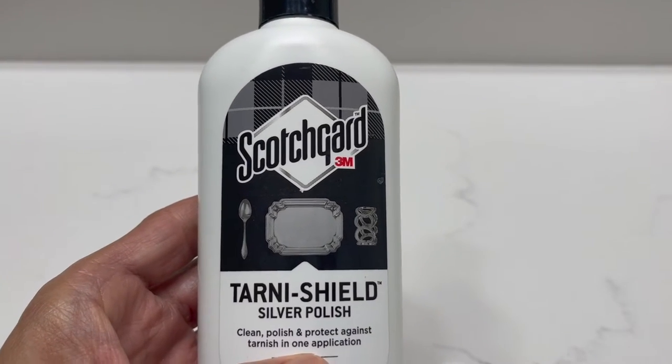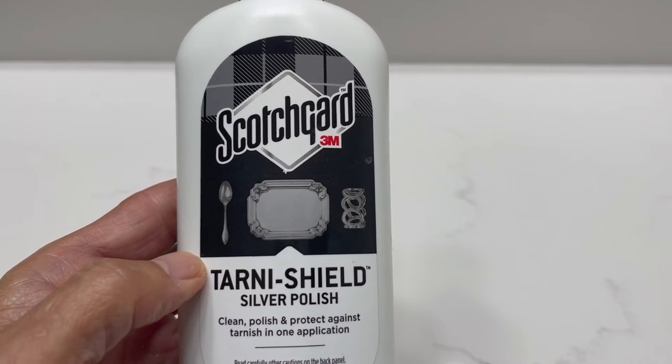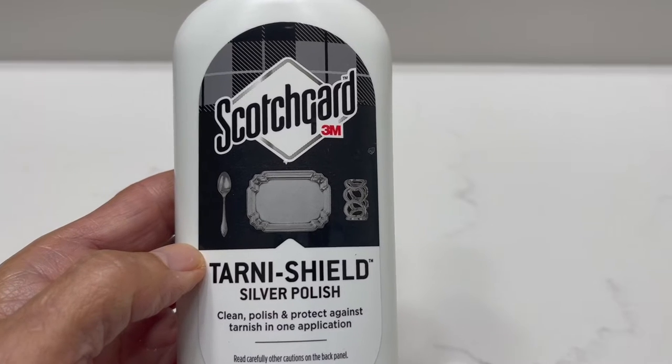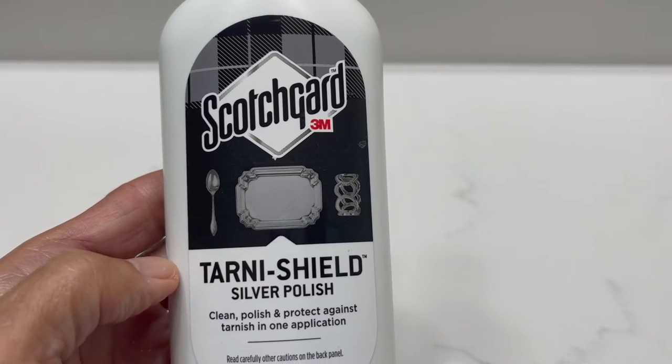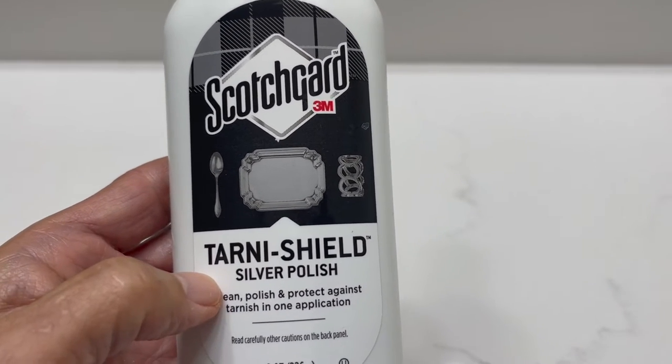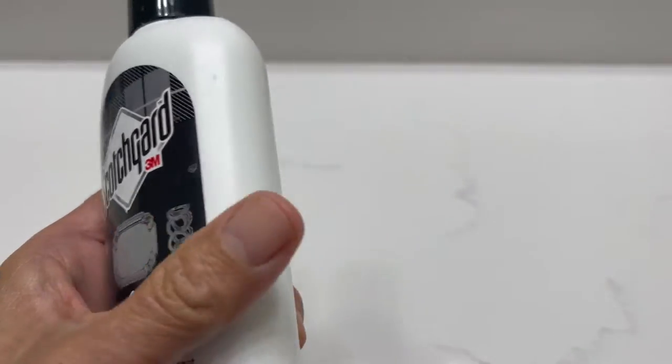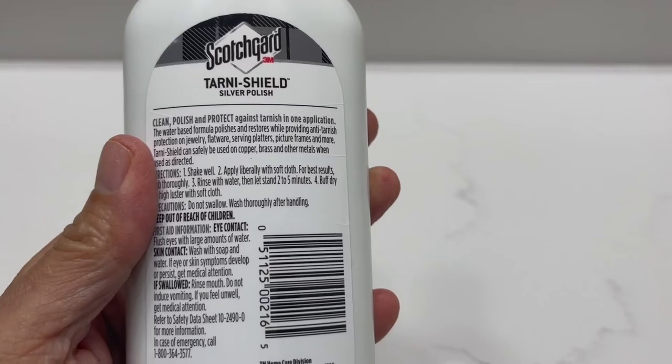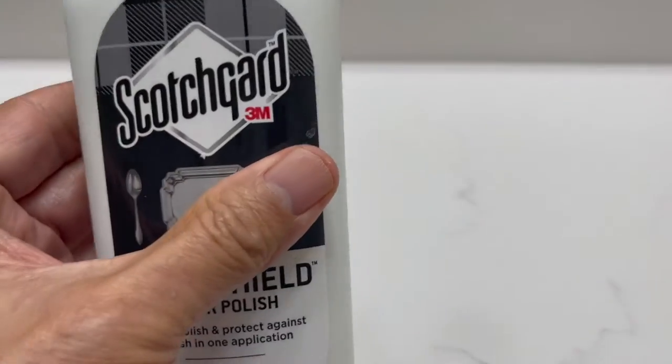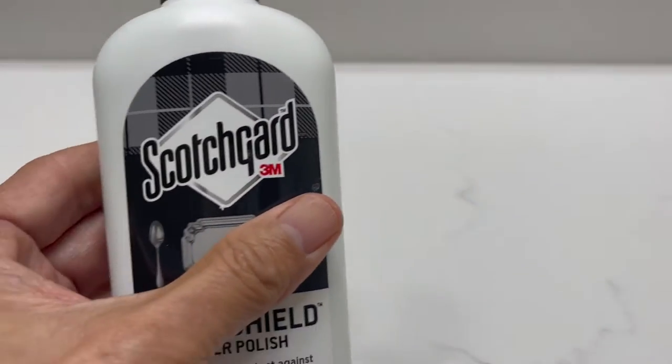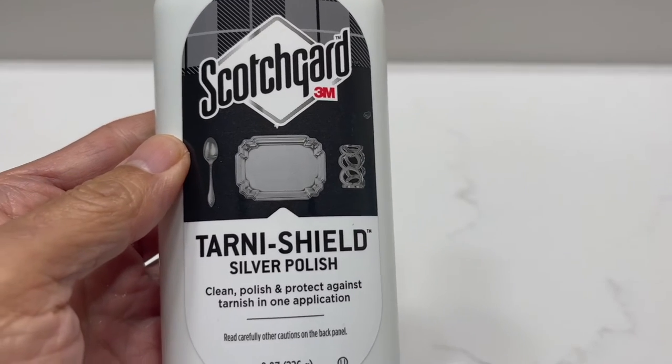The last thing that we'll need for step three of this is something I've found to be very useful is the Scotchgard 3M Tarnish Shield Silver Polish. It cleans, protects, and that's really a nice feature. It will prevent tarnish from building up on your trumpet or any silver plated mouthpiece.